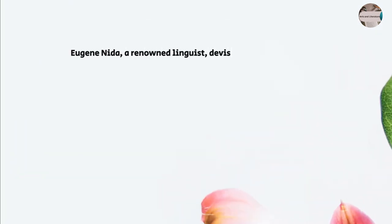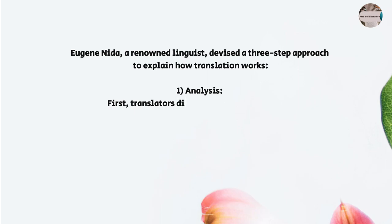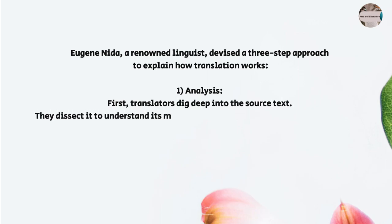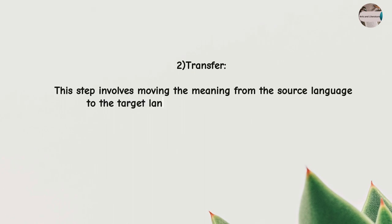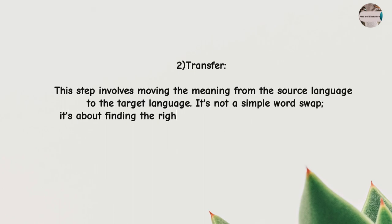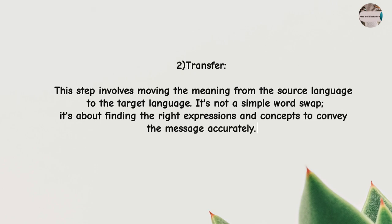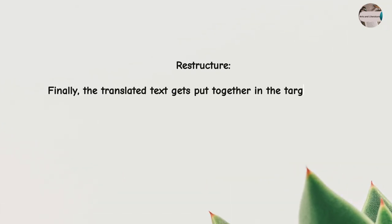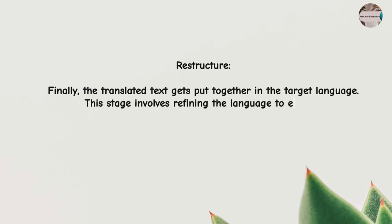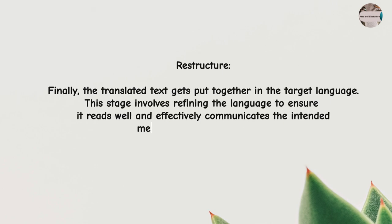Eugene Nida, a renowned linguist, devised a three-step approach to explain how translation works. First, analysis: translators dig deep into the source text, dissecting it to understand its meaning, cultural context, and language structure — essentially decoding the layers of information. Second, transfer: this step involves moving the meaning from the source language to the target language — not a simple word swap, but finding the right expressions and concepts to convey the message accurately. Third, restructure: the translated text is put together in the target language, refining the language to ensure it reads well and effectively communicates the intended message to the new audience.